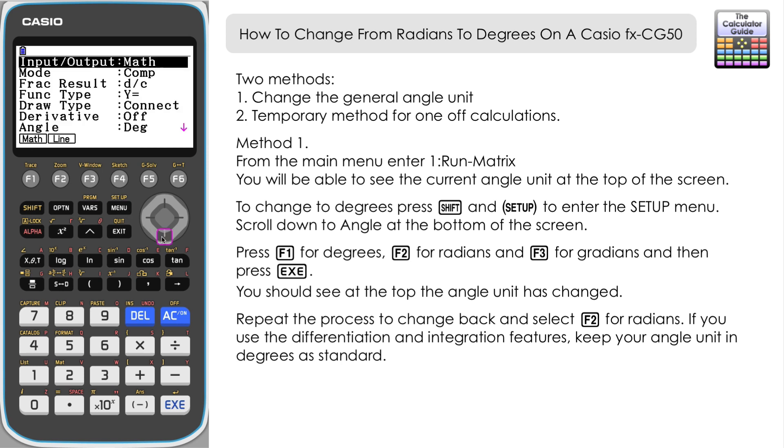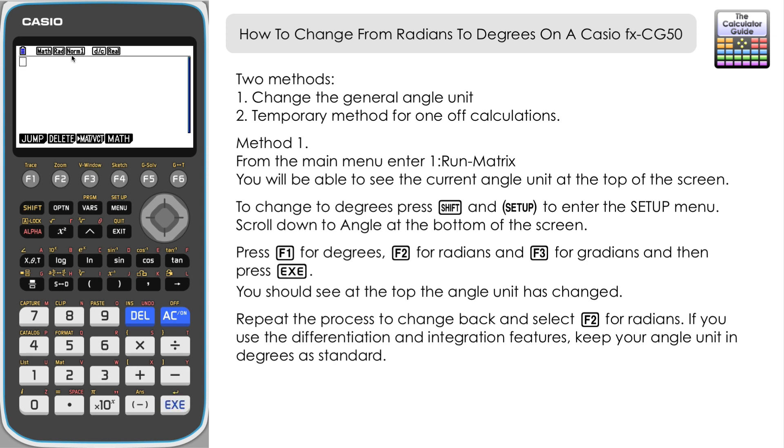Shift, setup, down to Angle Unit, and F2 for radians. Might be worth noting here that if we do use the integration and differentiation features, it is best to have your calculator in radians to calculate those accurately. So I would probably suggest keeping it in radians as standard and then just changing it to degrees if you've got a lot of calculations involving degrees to do.